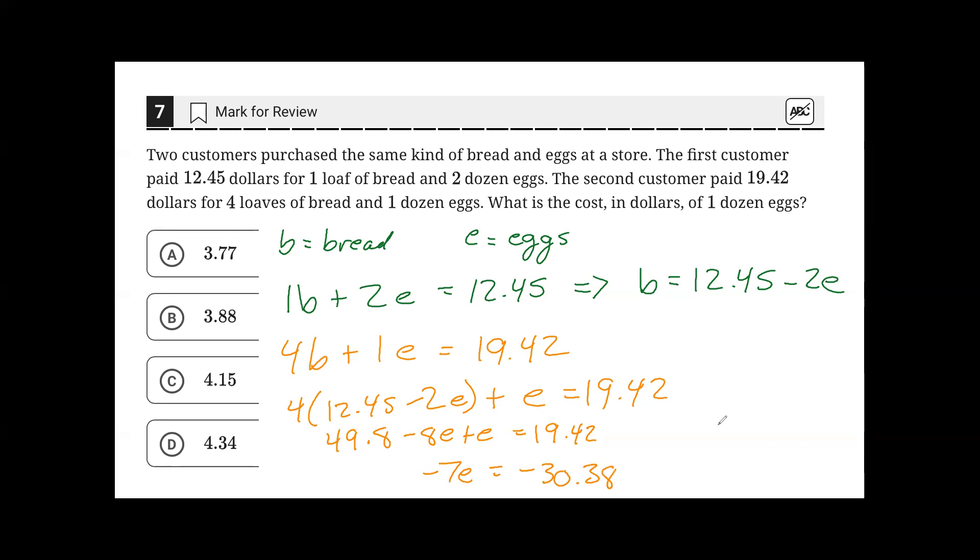Dividing both sides by negative 7 yields E equals 4.34. So that means one dozen eggs costs $4.34, and that matches answer choice D.